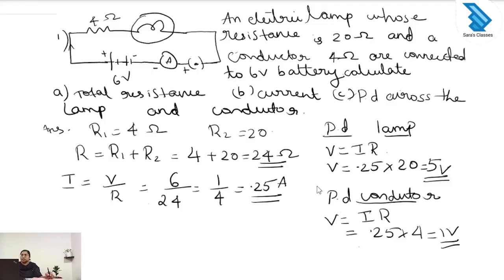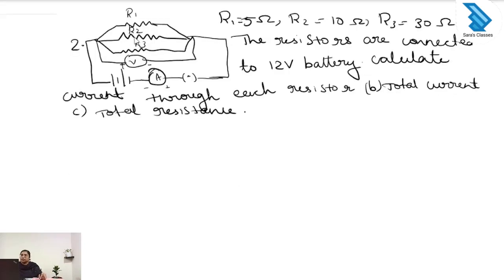So we can go to the next question. Second question: the resistors are connected in parallel. R1 is 5 ohm, R2 is 10 ohm, and R3 is 30 ohm. The resistors are connected to a 12 volt battery. We have to calculate the current through each resistor, total current, and total resistance.